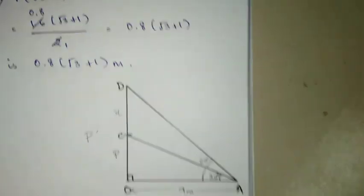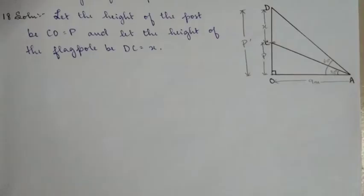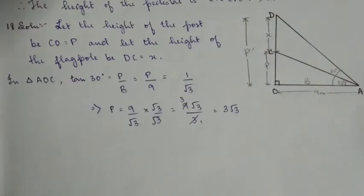They are asking us to find the height of the post and height of the flagpole. So we're going to call it X for the flag and for the pole it's P because it's the smaller perpendicular, right. So we're going to say let the height of the post be CO which is equal to P and let the height of the flagpole be DC which is equal to X, okay. Now in triangle AOC, we rationalize the root 3 in the denominator, okay, so you get 3 root 3 and this will be equation number one, alright.